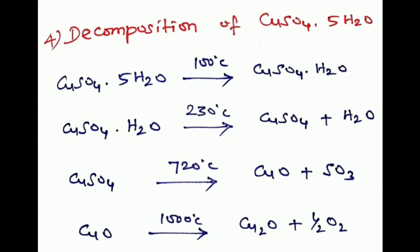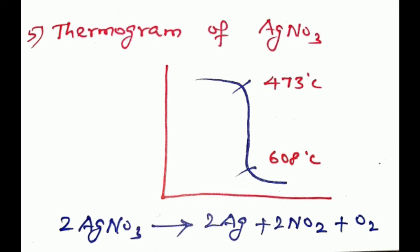Fifth example: thermogram of silver nitrate. At 473 degrees Celsius, it starts losing its weight. It loses nitrogen dioxide and oxygen. The weight loss is complete at 608 degrees Celsius. The final product is silver.